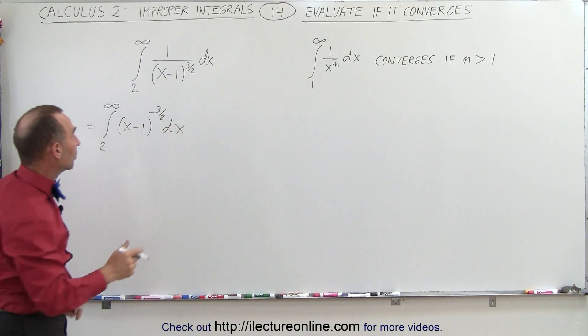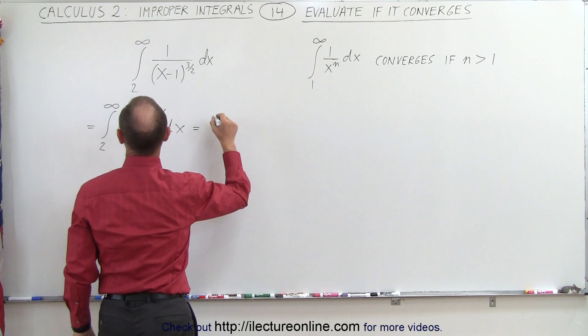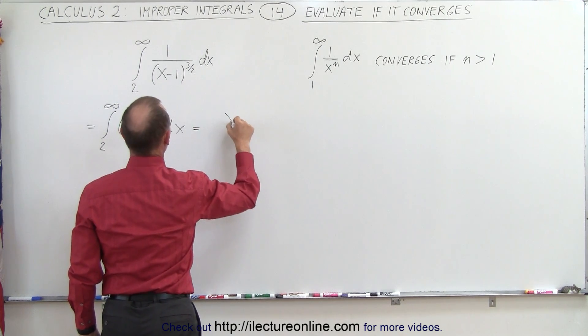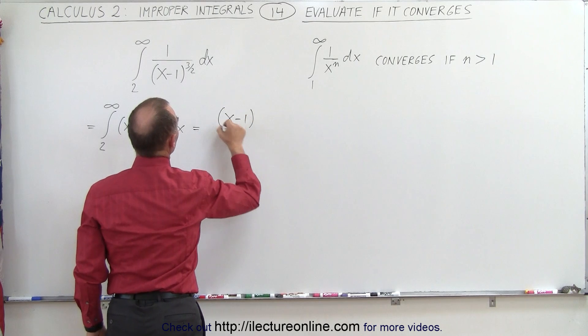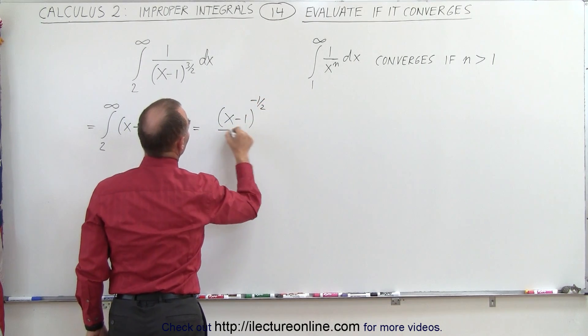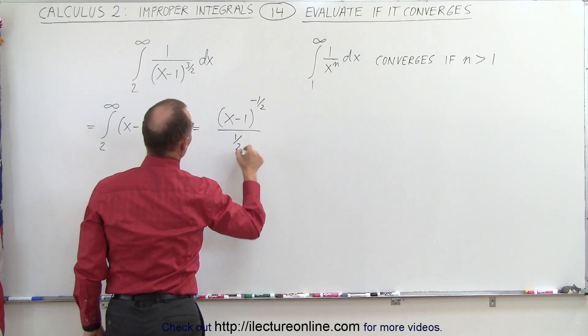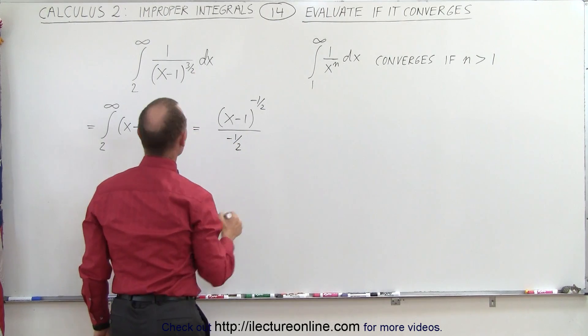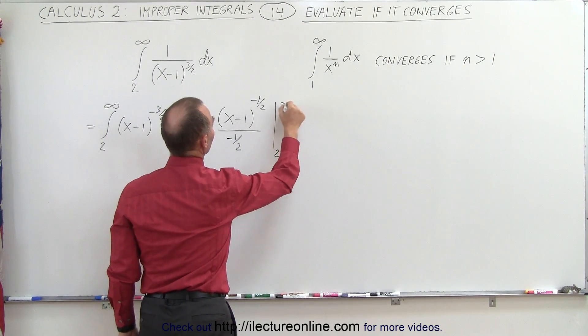All we need to do is add 1 to the exponent, divide by the new exponent. So this is equal to x minus 1 to the minus 1 half power, divided by the new exponent, minus 1 half, and evaluate it from 2 to infinity.